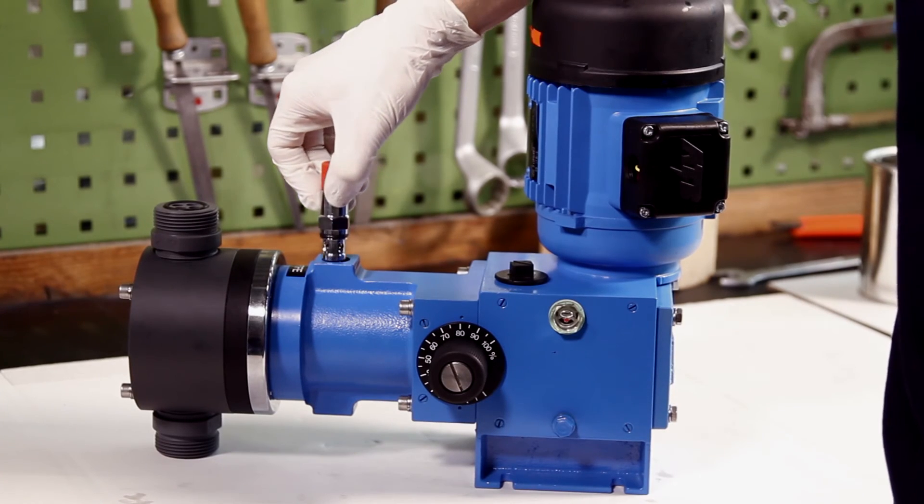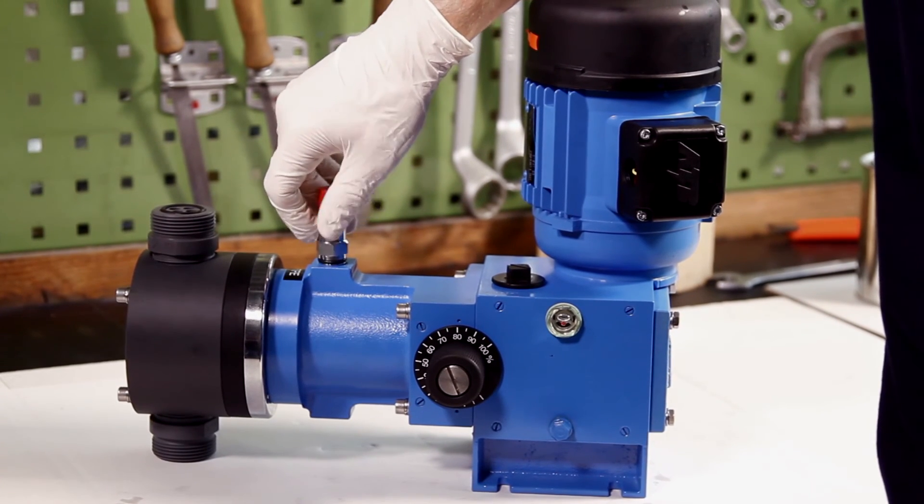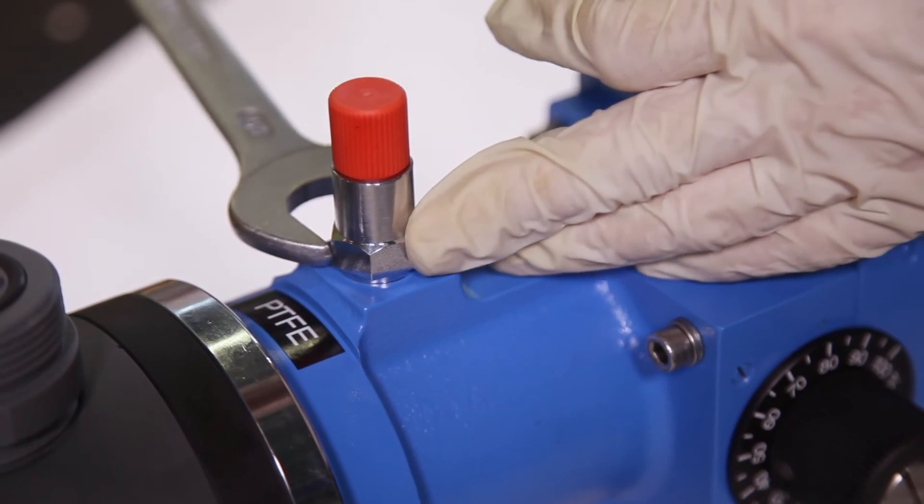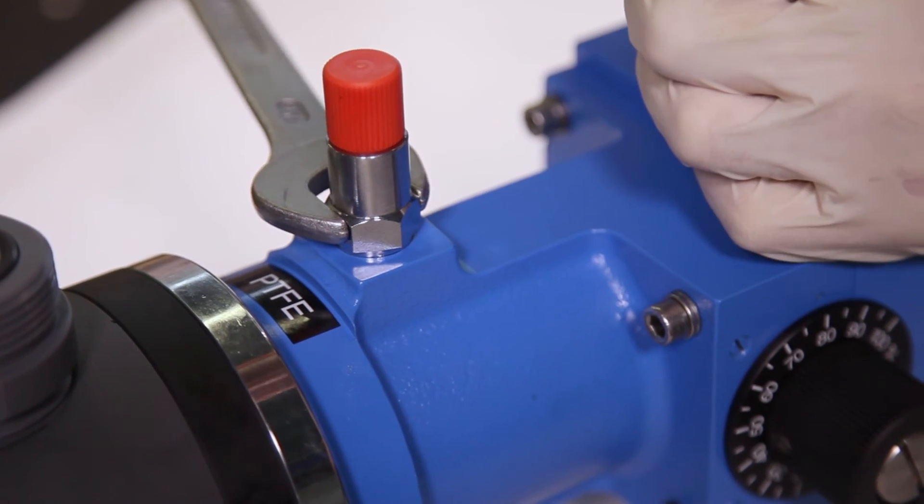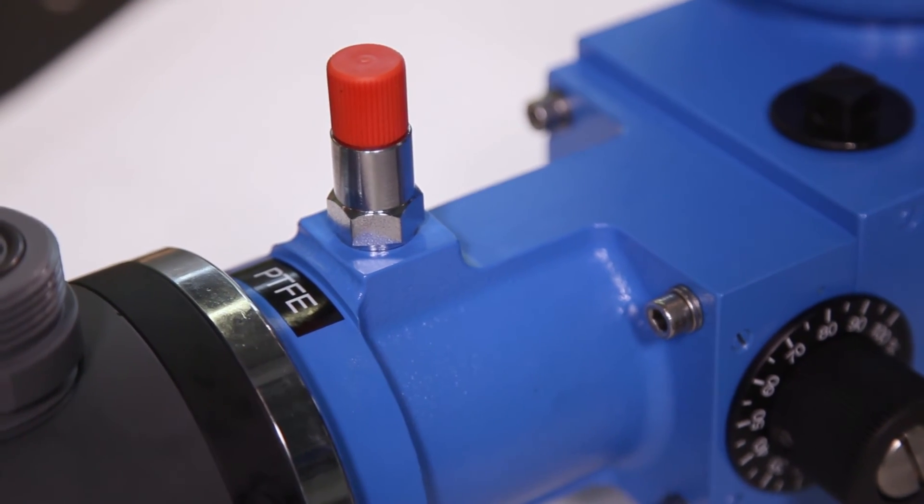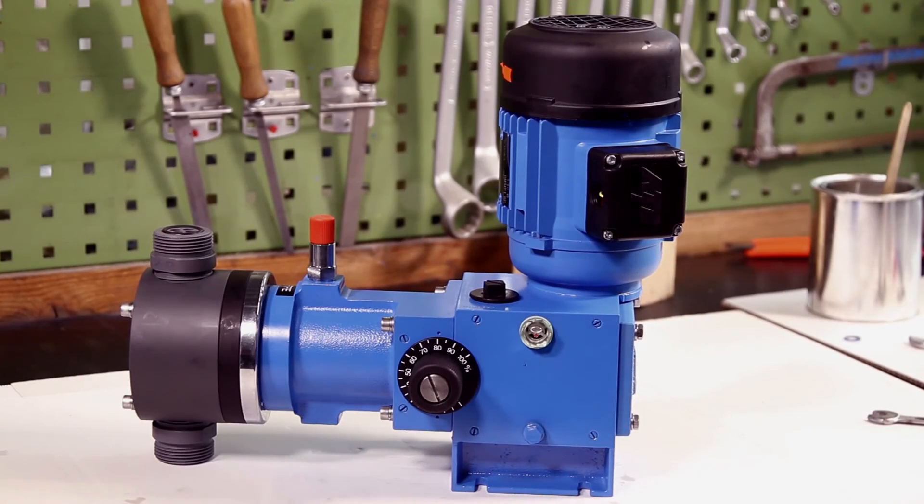Screw on the pressure relief valve after you have finished venting. Now the pump can be put into service according to the instructions.